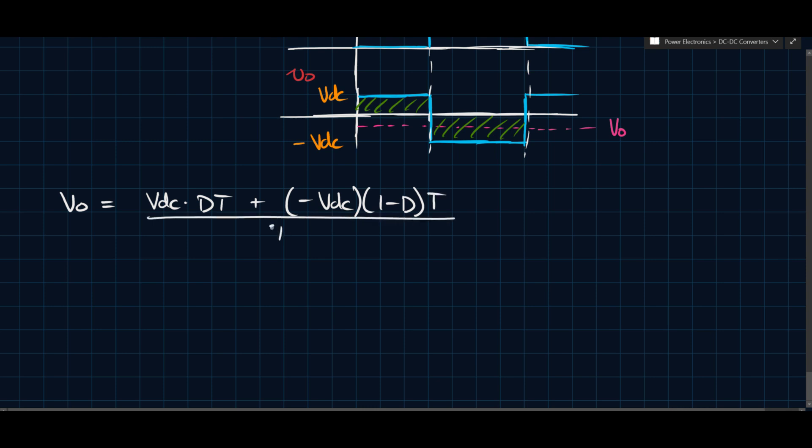And so when you cancel that, you'll find that, or the T at least, you cancel that, and you'll find VO is equal to 2D minus 1 VDC. And so you can say that VO over VDC is 2D minus 1, basically.